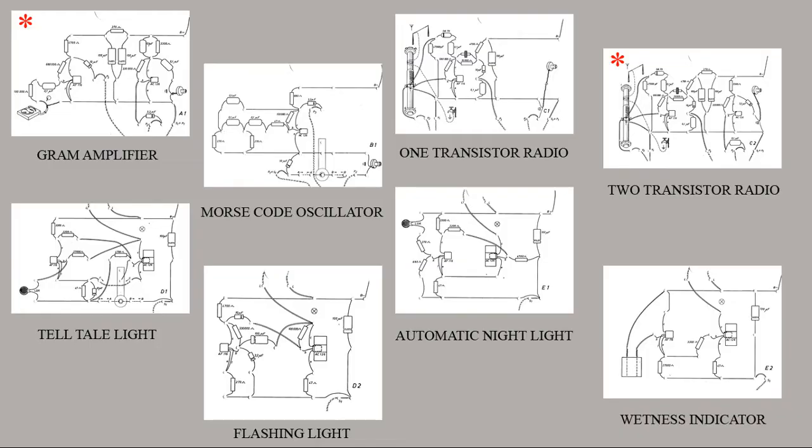Here we see a full set of eight EE-8 cards and their corresponding project descriptions. We'll only be making six of the eight circuits here as I have no suitable turntable and cartridge for the gramophone amp, and the two transistor radio will sound no different to the one transistor radio as we still need a small speaker amp to bring it up to a level we can hear on the video.